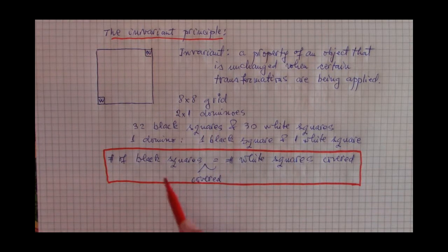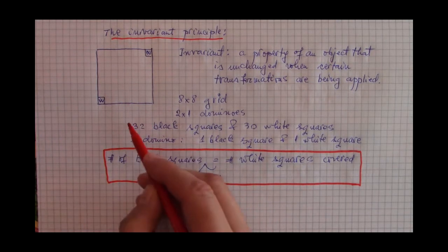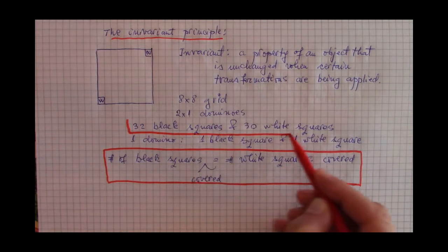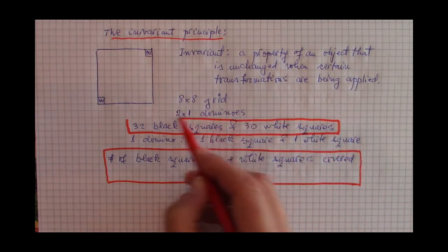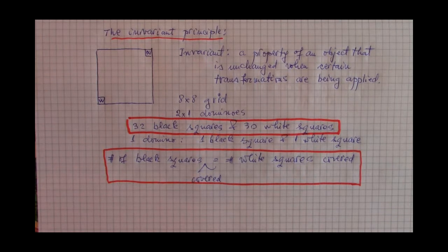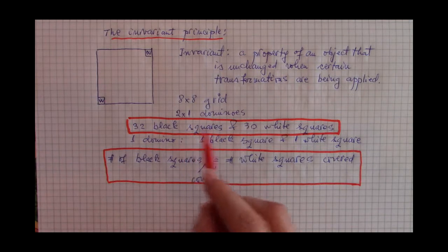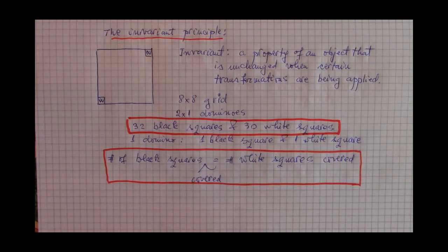Well, if any placement of dominoes in this shape has this property, how are we supposed to fully cover it without overlapping? It becomes clear that this cannot be done. There is no covering of this shape without any overlapping with two by one dominoes.